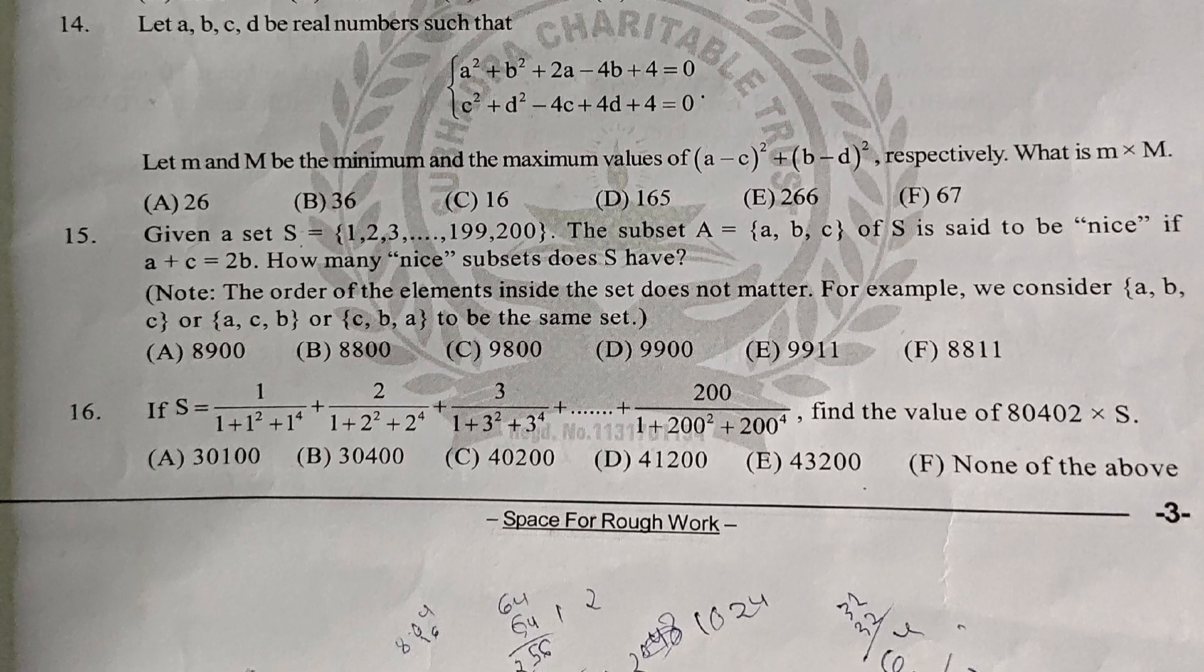Let A, B, C, D be real numbers such that A^2 + B^2 + 2AB - 4B + 4 = 0 and C^2 + D^2 - 4C + 4D + 4 = 0. What is M × capital M? The answer is 14, C, 36.